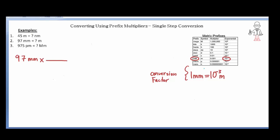We put millimeters in the denominator and meters in the numerator. The relationship is: in one millimeter I have 10 to the minus 3 meters. The denominator unit cancels with the numerator unit, giving us 97 times 10 to the minus 3 meters. Writing that in correct scientific notation: 9.7 times 10 to the minus 2 meters.